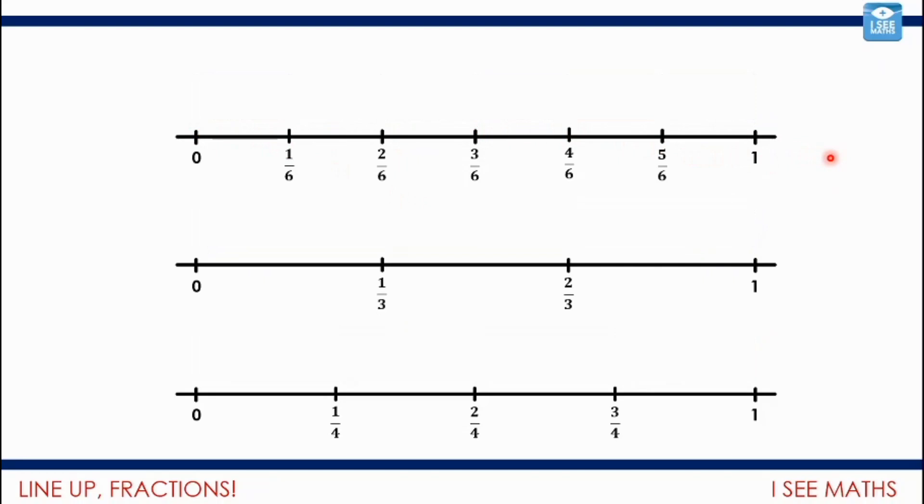And let me just remove those boxes and let's see those equivalent fractions—fractions that are the same. Two sixths is the same as one third, and four sixths is the same as two thirds. This space is just double this space, for example. And three sixths is the same as two quarters, or a half.